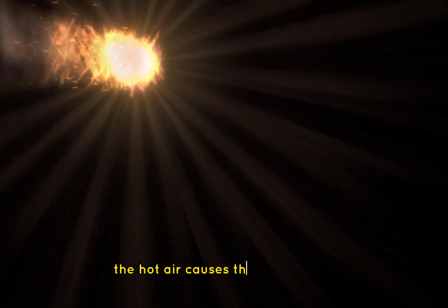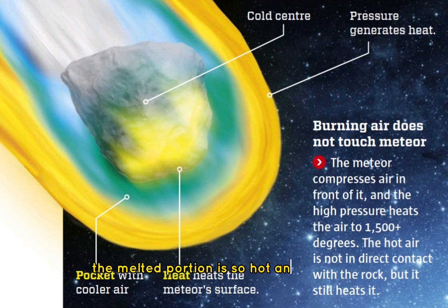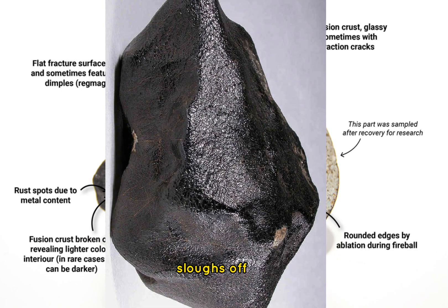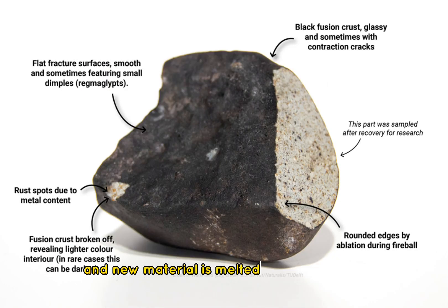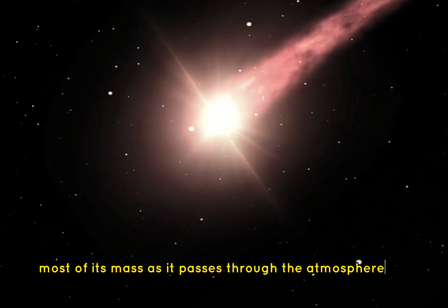The hot air causes the exterior of stony meteoroids to melt. The melted portion is so hot and fluid that it immediately ablates, sloughs off, and new material is melted underneath. A meteoroid loses most of its mass as it passes through the atmosphere.